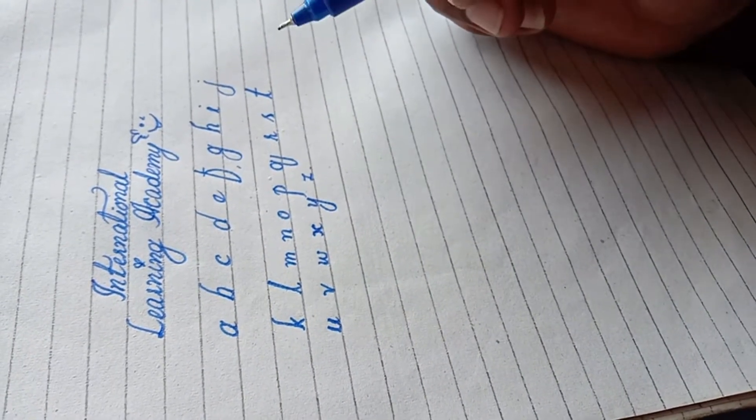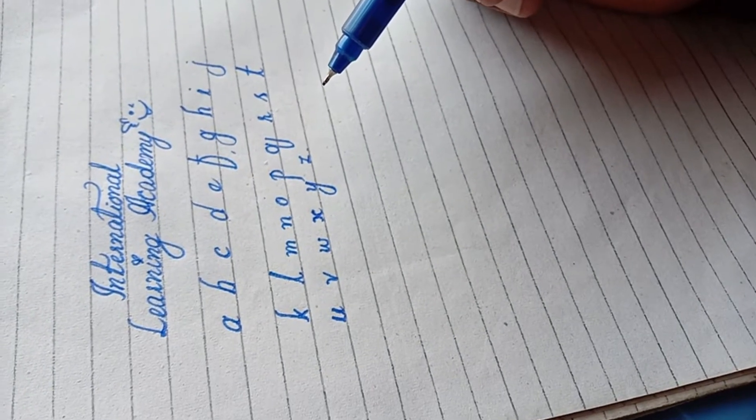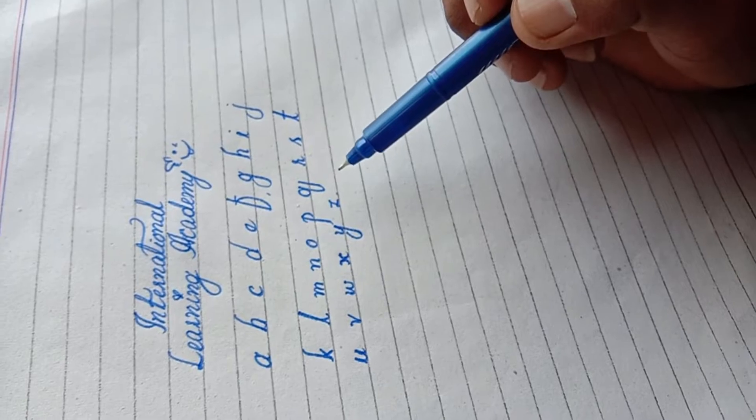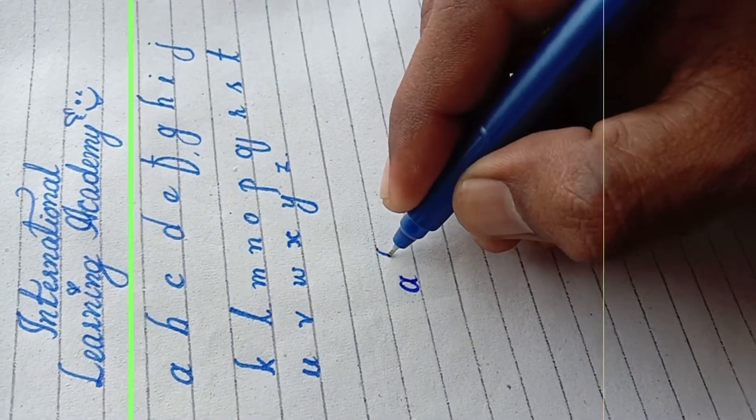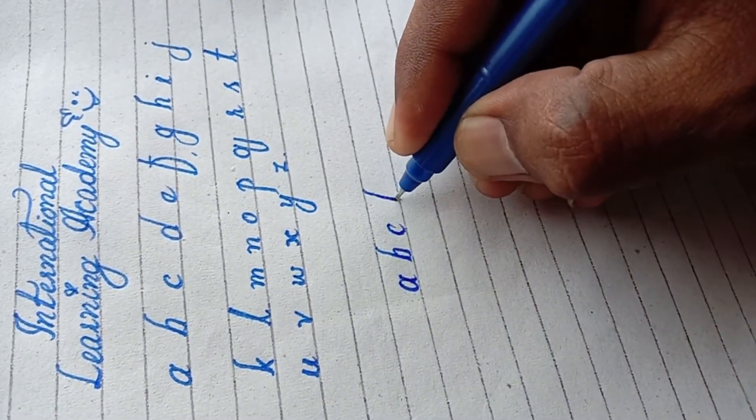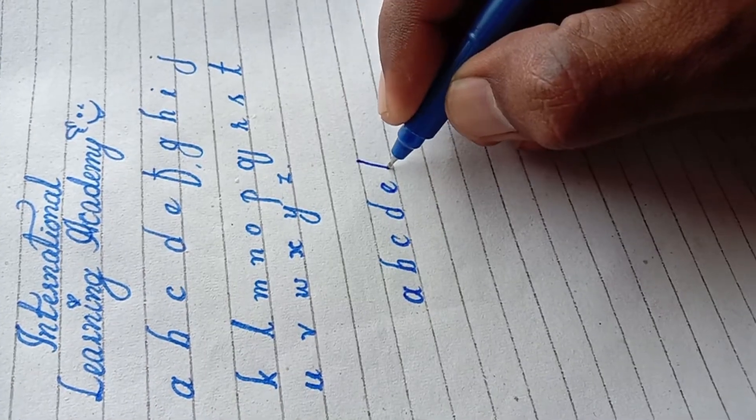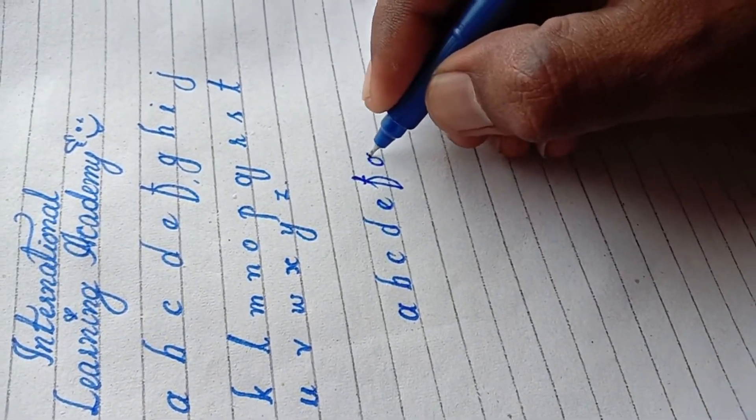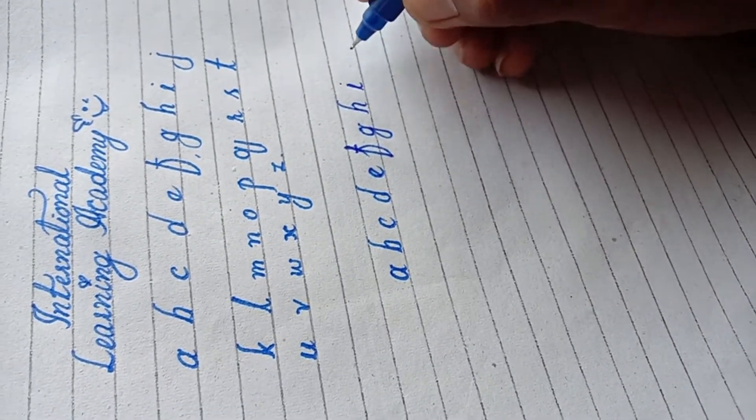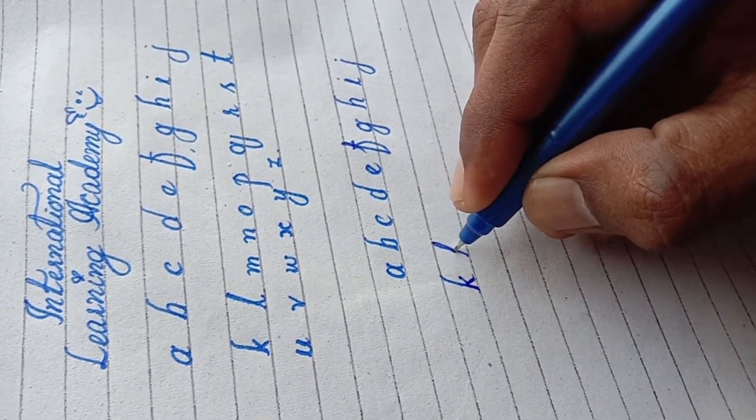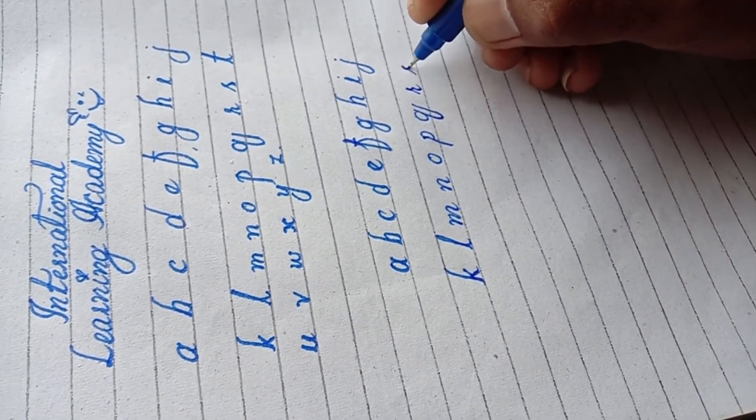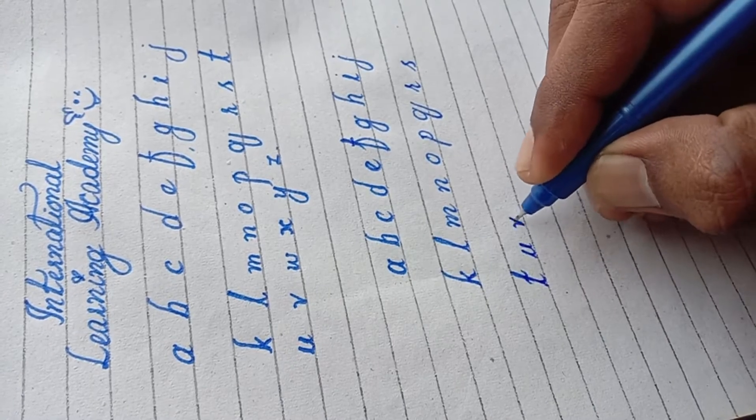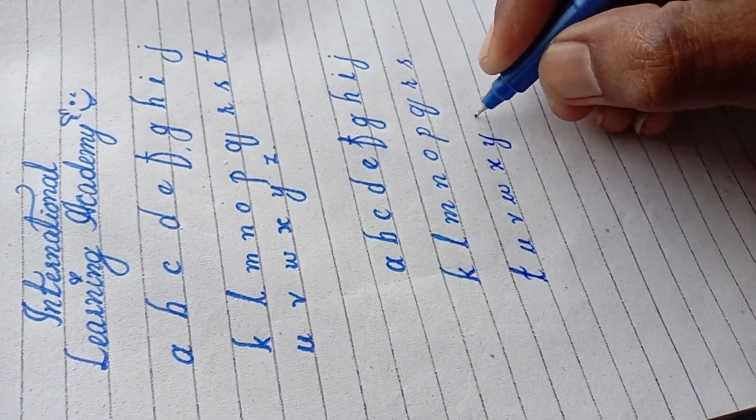Dear friends, this writing is small letters of italic font style. And now I am writing from A to Z. Let's see how I am writing. Thank you.